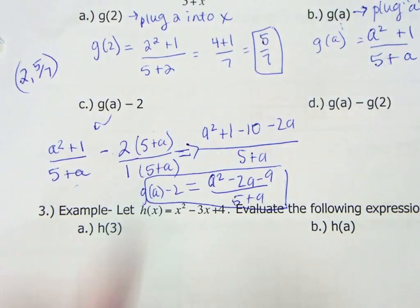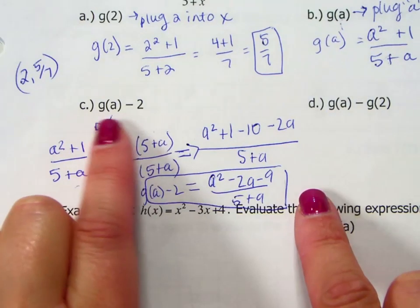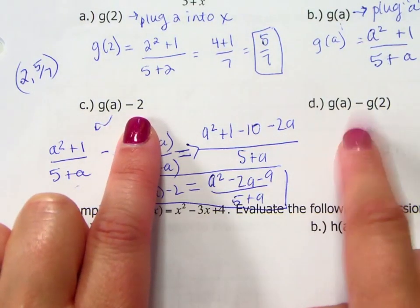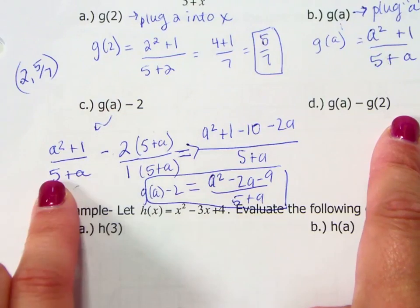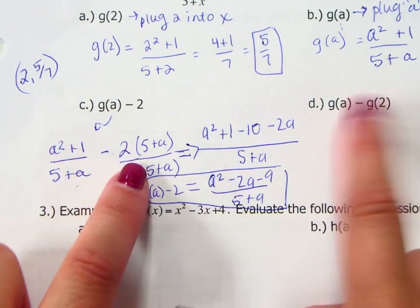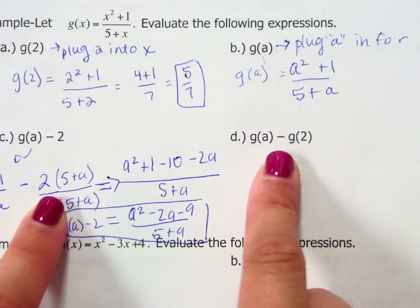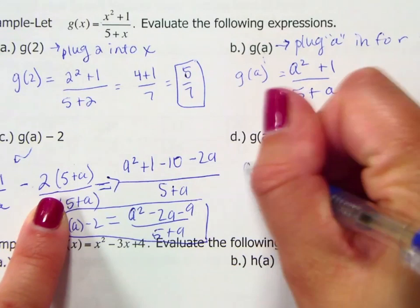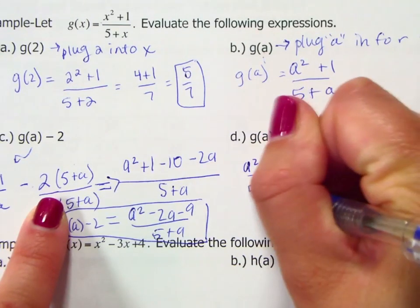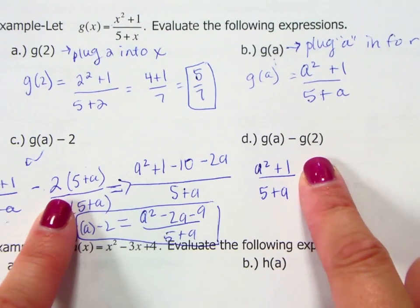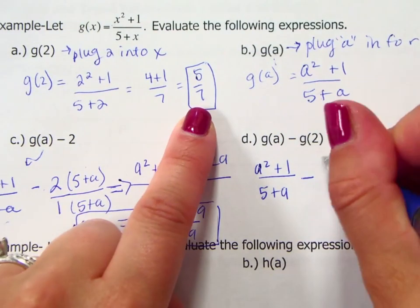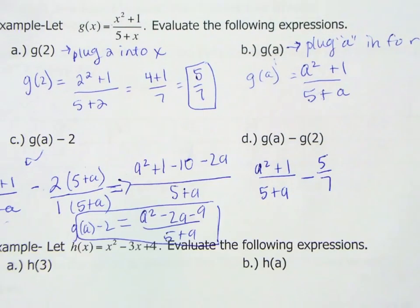I want you to notice the difference between this, g(a) minus 2, and g(a) minus g(2). Notice in this one we found g(a), and then from that we just subtracted 2. The difference here is we are taking our g(a), which again is the a squared plus 1 over 5 plus a. But this time we are subtracting g(2). We found g(2) to be 5 over 7. So you really have to watch your notation to make sure that you are doing the correct thing.